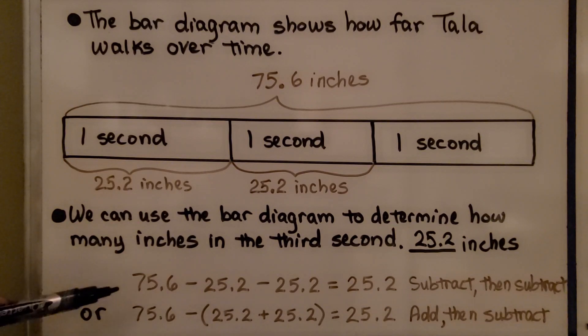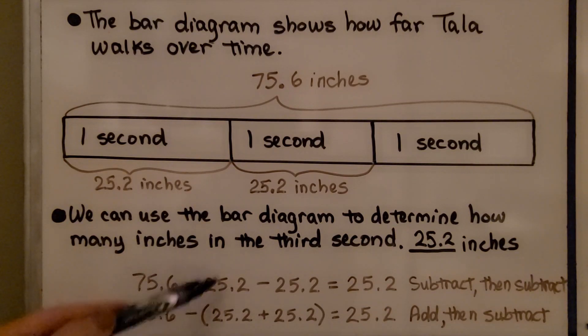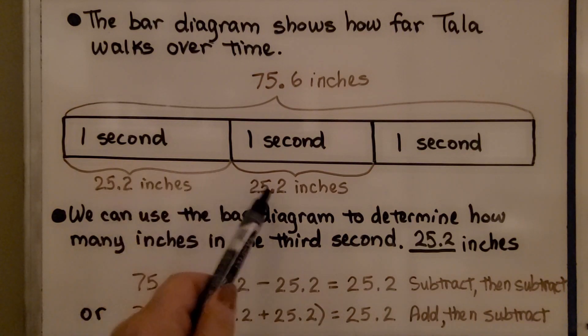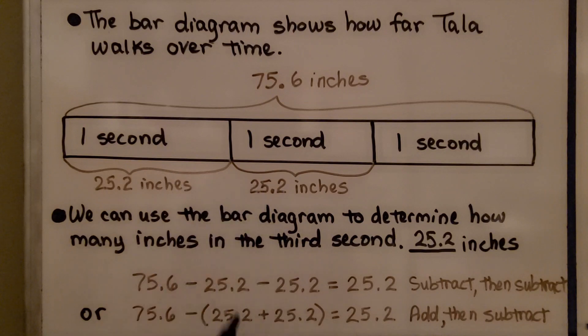We can also do the 75.6 and subtract 25.2, get a difference, and then subtract the other 25.2, and we'll be left with 25.2. We can also add these two together first, and then subtract their sum from 75.6. Either way, we're going to get 25.2.